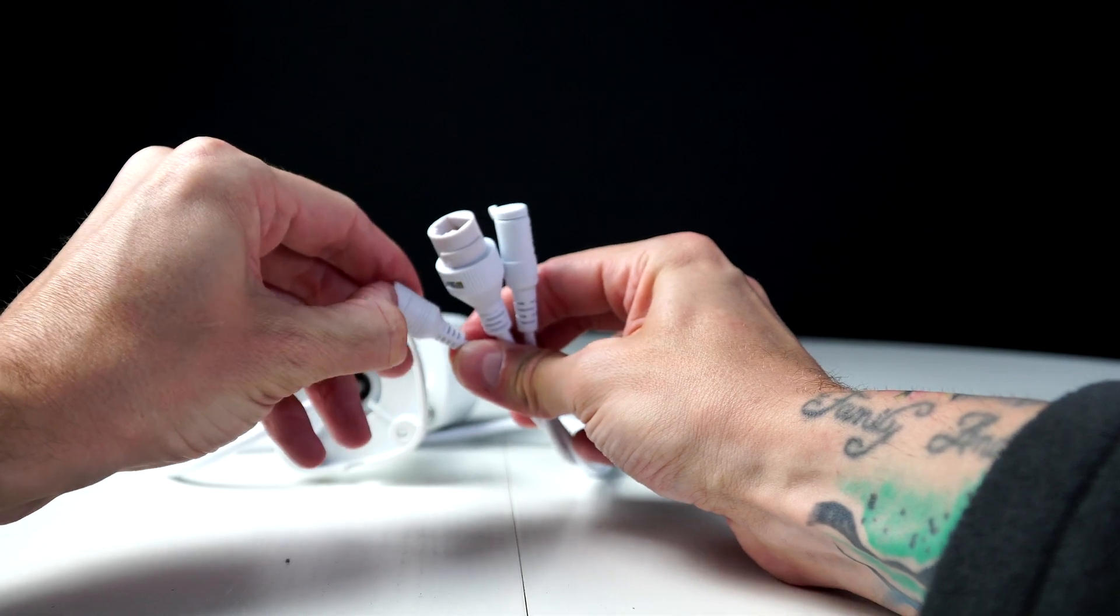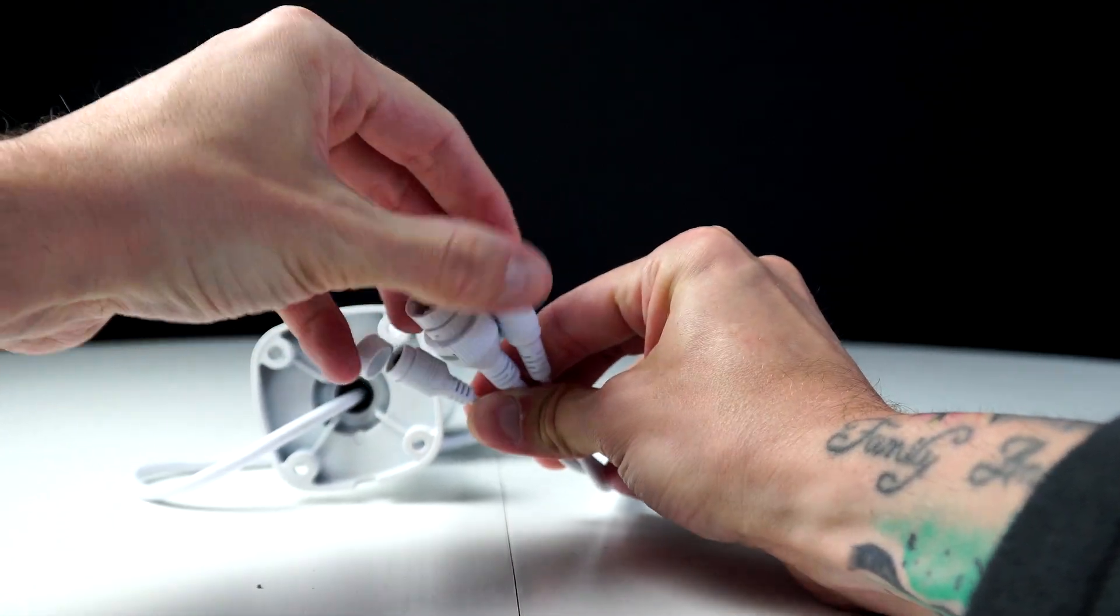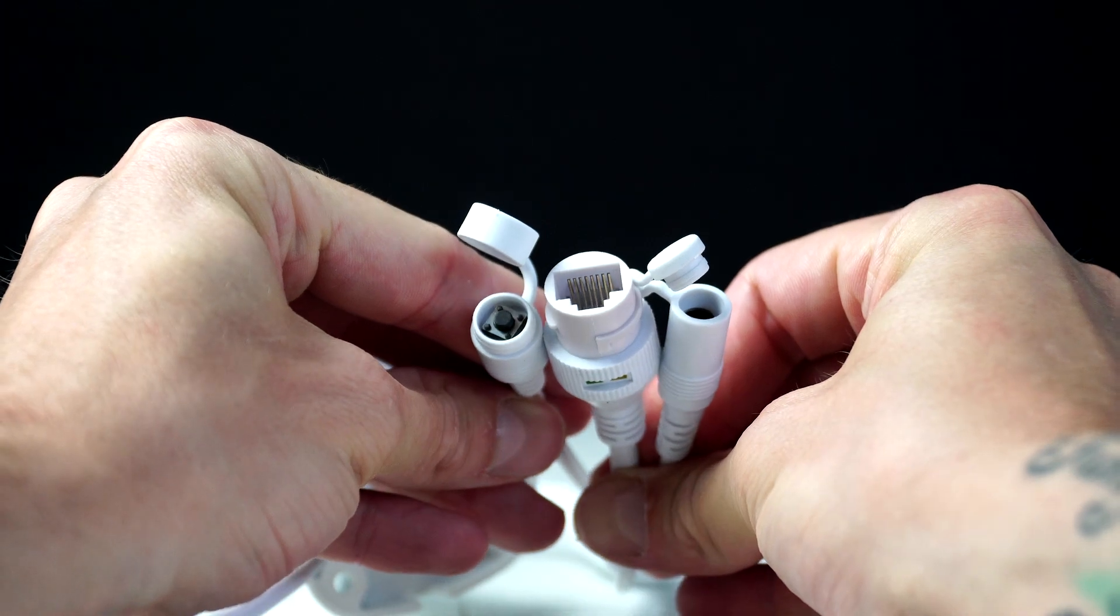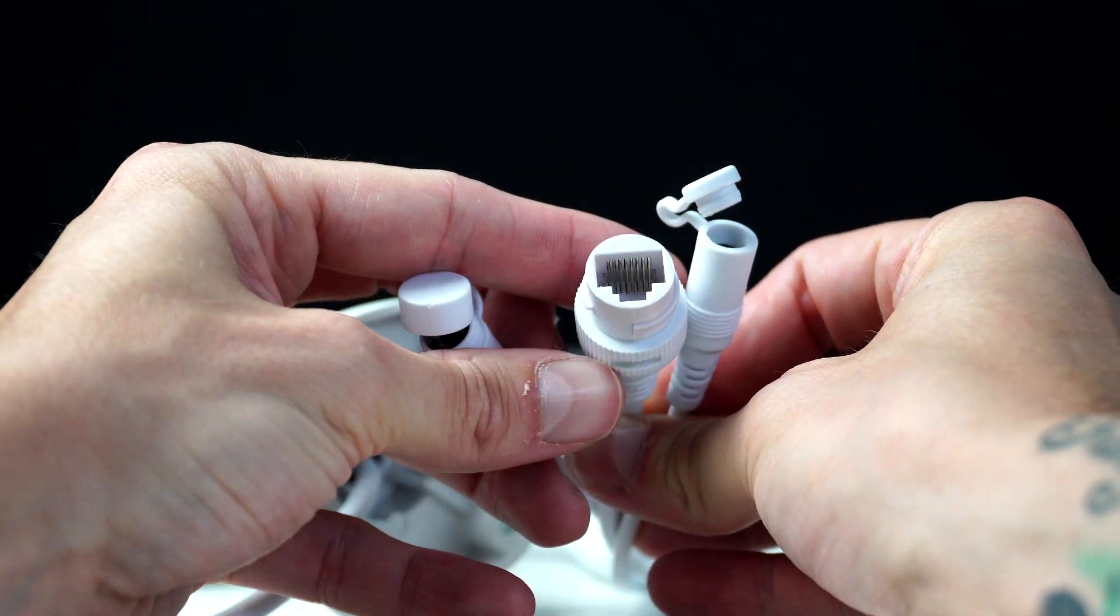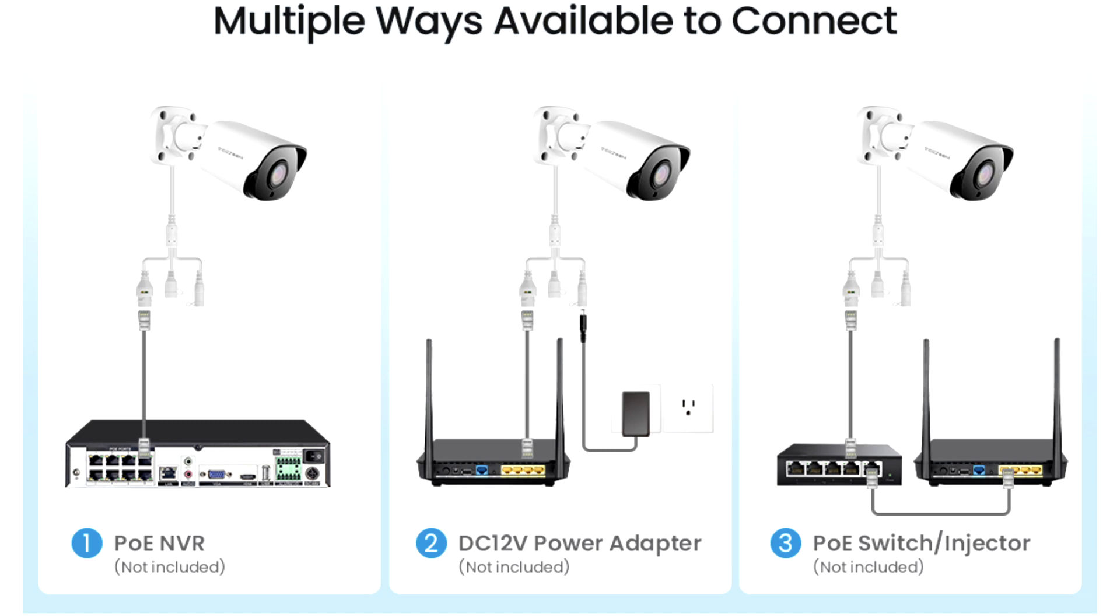Now on the end of each cable, the cable splits into three. You have a reset button, the RJ45 Ethernet port, and on the right side, we have the option to add a power lead.